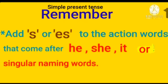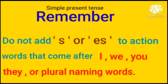There are two basic rules in simple present tense to remember. The first rule: we should add s or es to the action words that come after he, she, it, or singular naming words. The second basic rule: do not add s or es to the action words that come after I, we, you, they, or plural naming words.